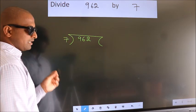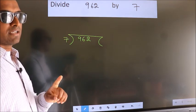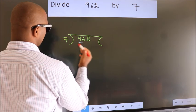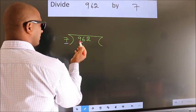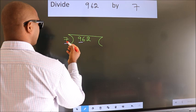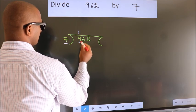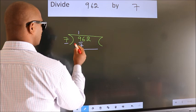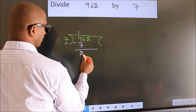This is your step 1. Next, here we have 9, here 7. A number close to 9 in the 7 table is 7 once, which is 7. Now, we should subtract. We get 2.